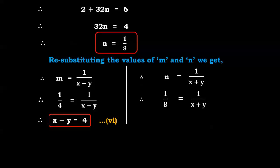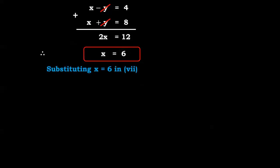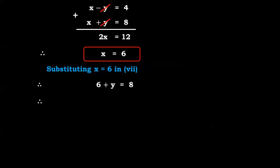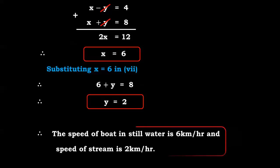Re-substituting: m = 1/(x-y) = 1/4, so x - y = 4, equation 6. And n = 1/(x+y) = 1/8, so x + y = 8, equation 7. Adding equations 6 and 7: 2x = 12, so x = 6. Substituting x = 6 in equation 7: y = 2. The speed of the boat in still water is 6 km/hr and the speed of the stream is 2 km/hr.